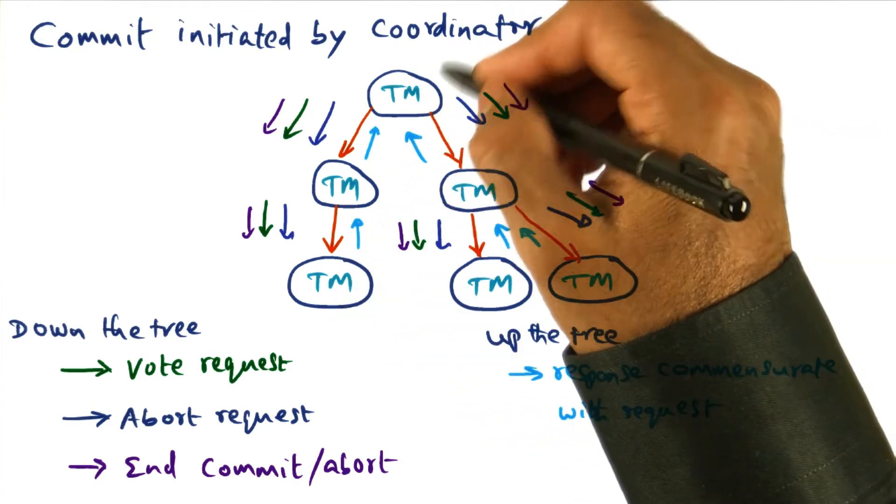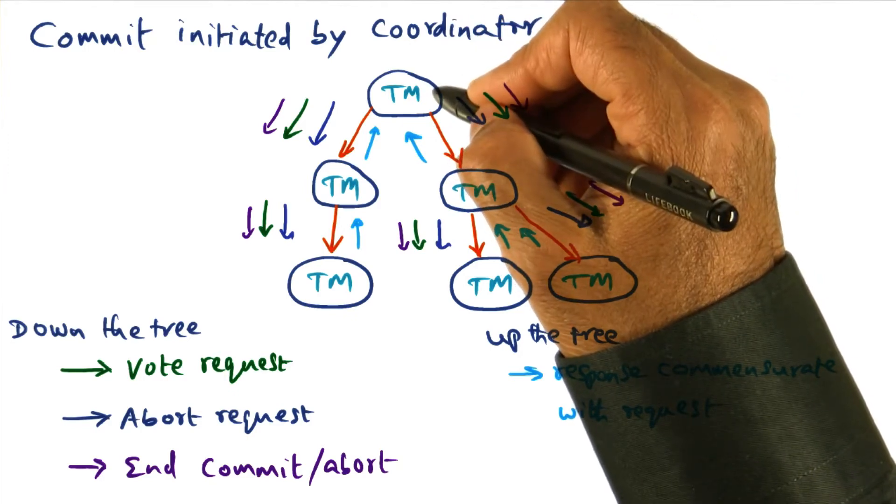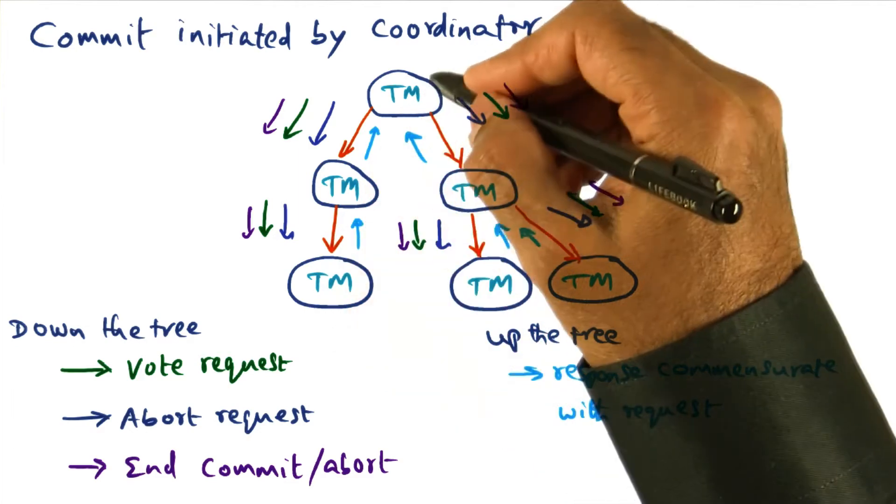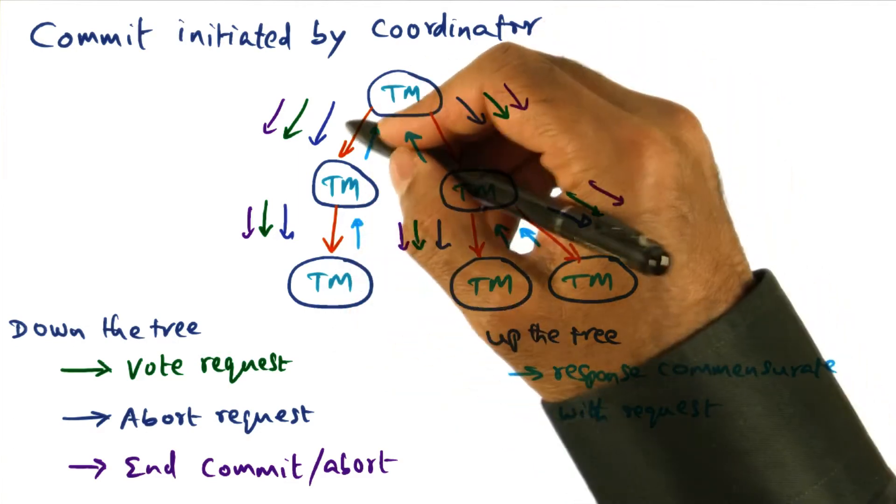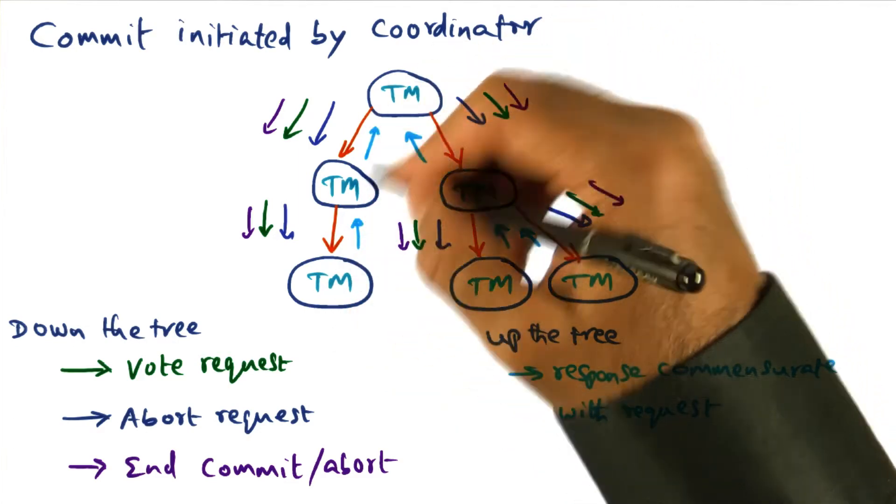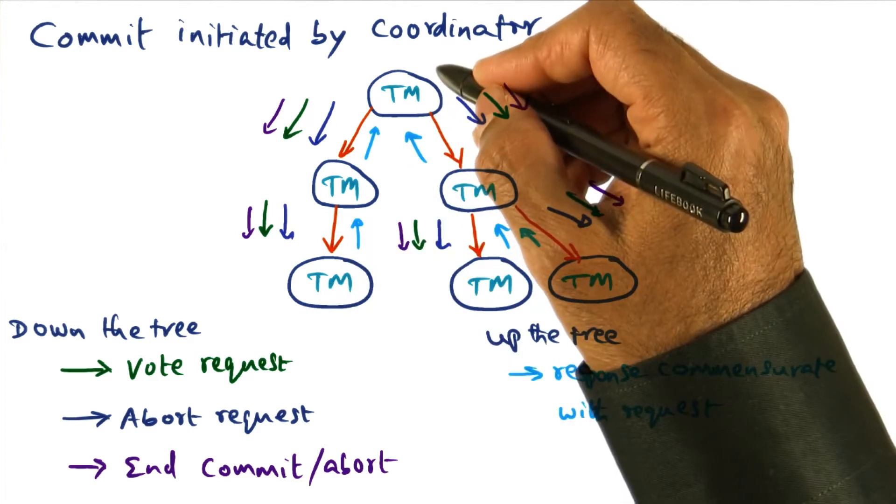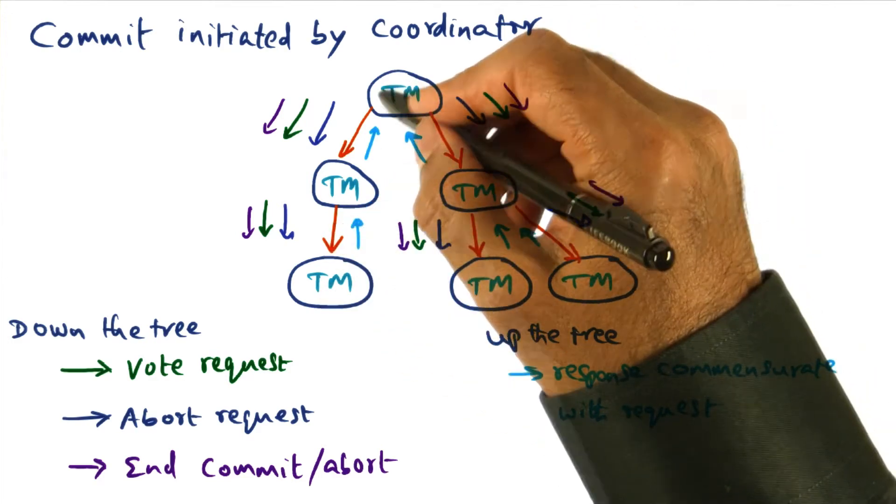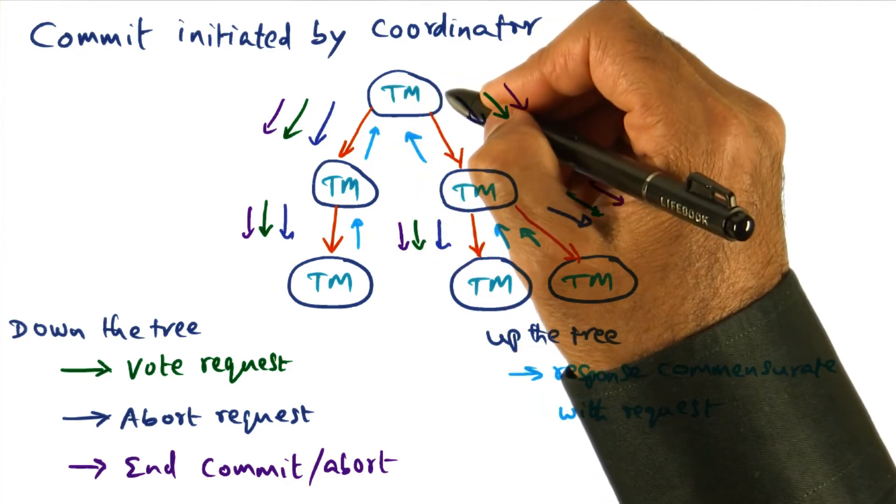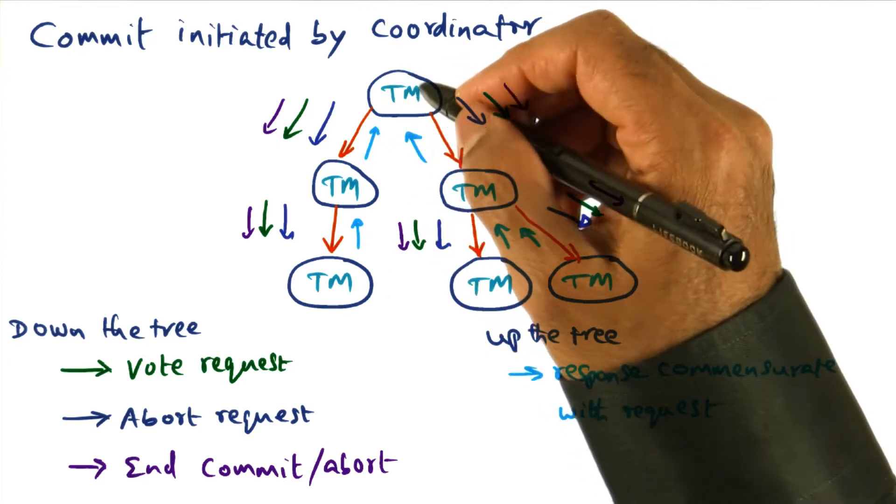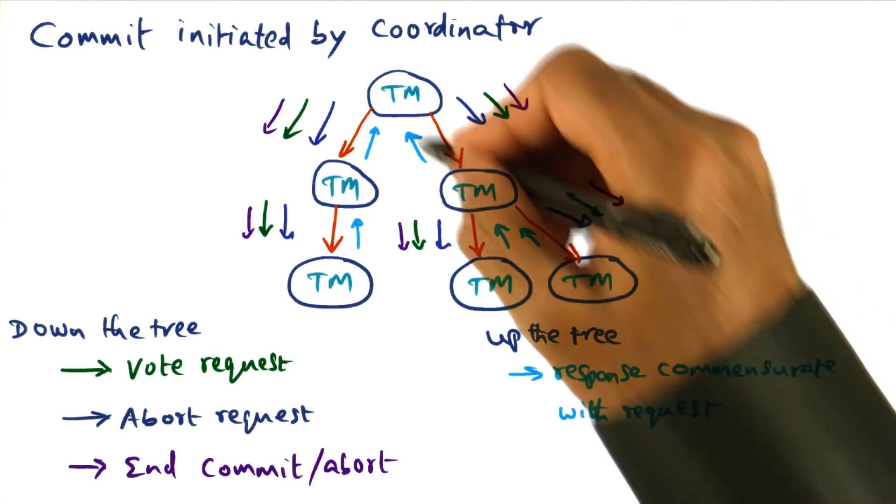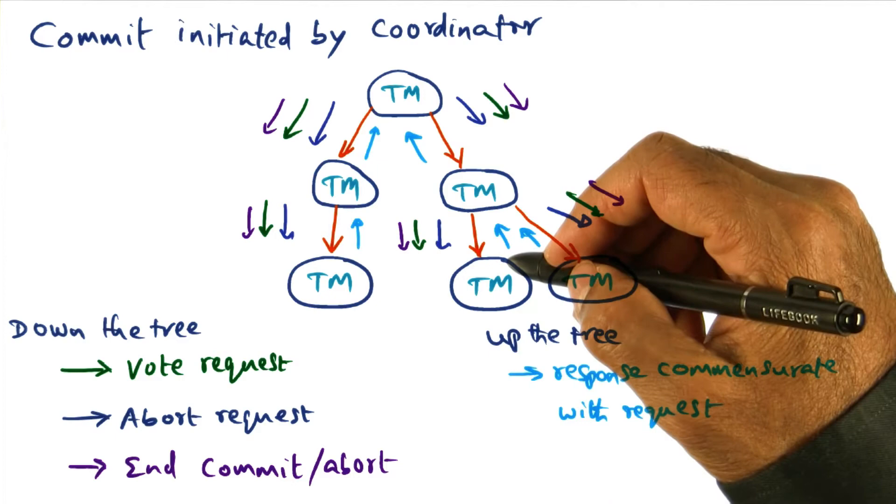If the transaction manager, the coordinator, decides that it is time to commit, it might ask for vote request on committing, or it might ask for an abort request, or it might send an end of commit or abort. These are all the communication that would be initiated by the coordinator of the transaction. And correspondingly, responses will come back up the tree, commensurate with the request that was given.